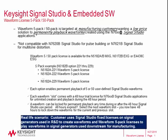Waveform licensing enables you to license waveforms that you generate and download from any Signal Studio application for unlimited playback in a signal generator. Each licensing option 221 through 229 allows you to permanently license up to five waveforms each, or options 250 through 259 allows you to permanently license up to 50 waveforms each of your choice.